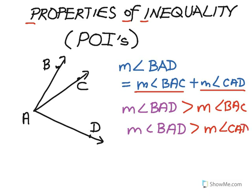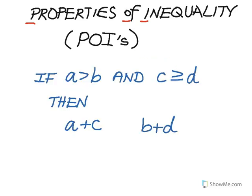A third property of inequality is this. If A is greater than B, and C is greater than or equal to D, I can add C to one side and D to the other side of the original inequality A is greater than B, and the inequality remains true. So the notion is that if I have a true inequality and I add the same thing to both sides, or add a greater thing to the side that's greater, the inequality will remain true: A plus C is greater than B plus D.